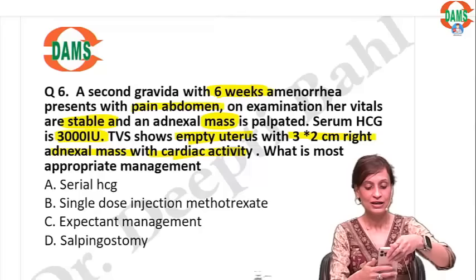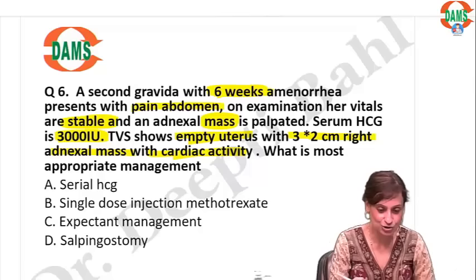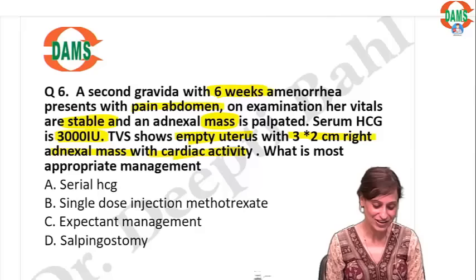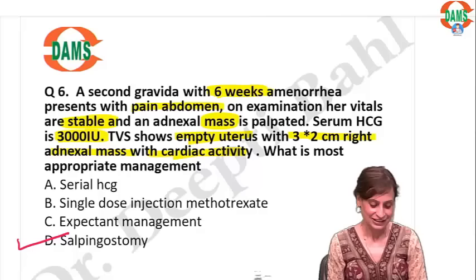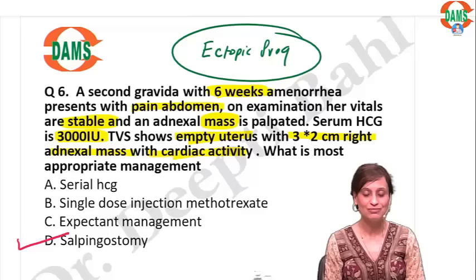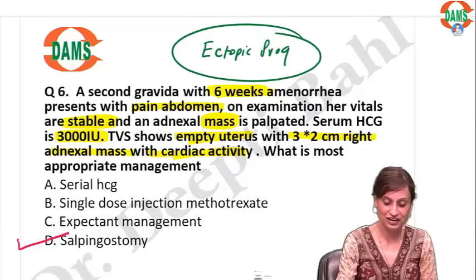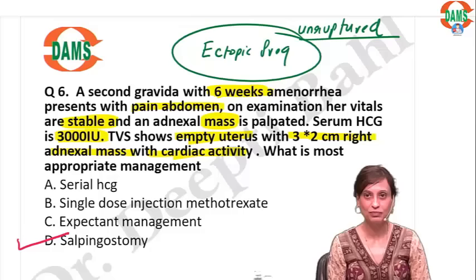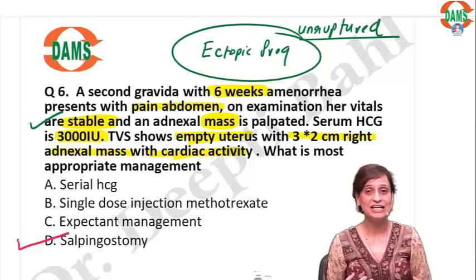The answer to this question is D — salpingostomy. We are dealing with a case of ectopic pregnancy. Is it ruptured or unruptured? Unruptured — because vitals are stable and there are no signs of ruptured ectopic. Now look at the size: is the ectopic less than 3 cm? Yes. Is HCG less than 5000? Yes. Is she hemodynamically stable? Yes.